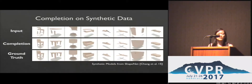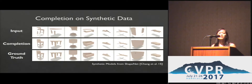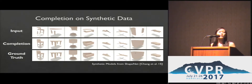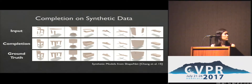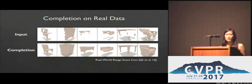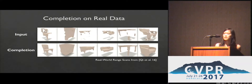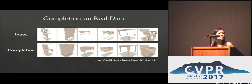Here are some completion results on synthetic models from ShapeNet. Even with very partial input, we recover a lot of missing structure and detail. We also tested our method on real-world range scans, again recovering a significant amount of missing information.